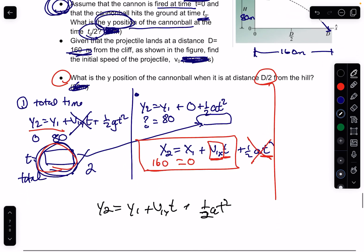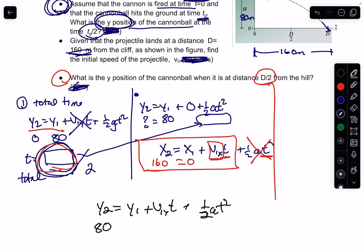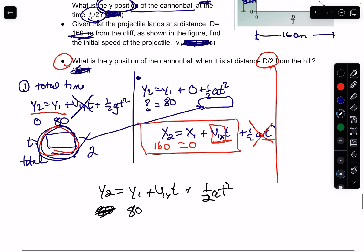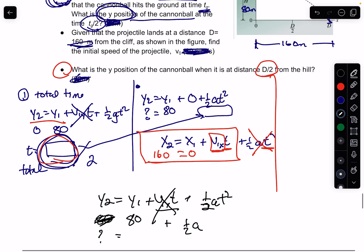Hold on a second. Your y1 is 80, your y2 is question mark. You're trying to solve for that. The v1y, that's 0, so that drops out, plus 1 half at squared.